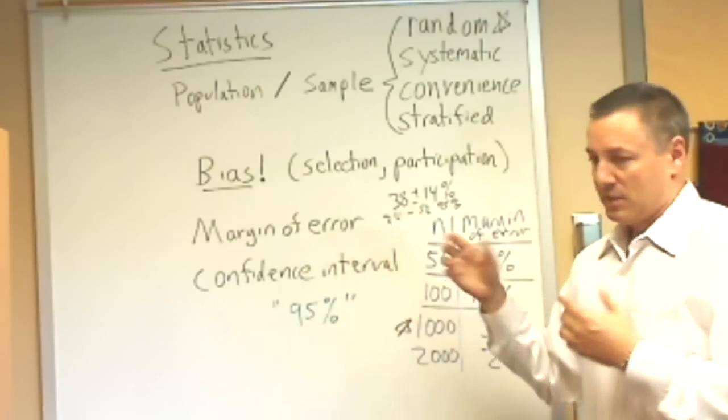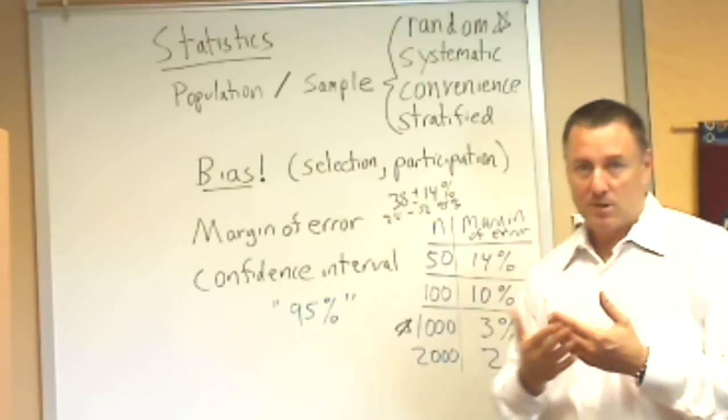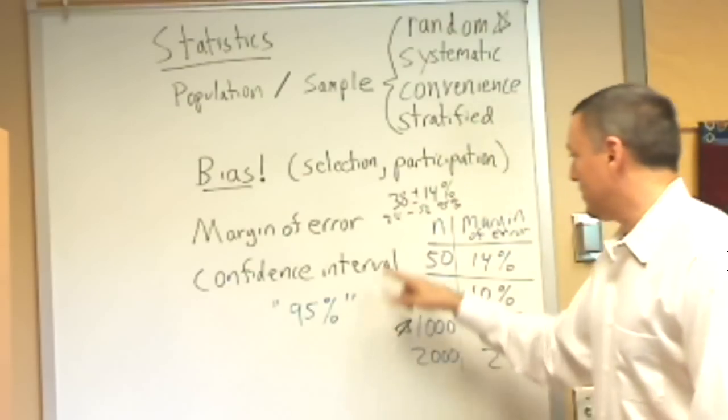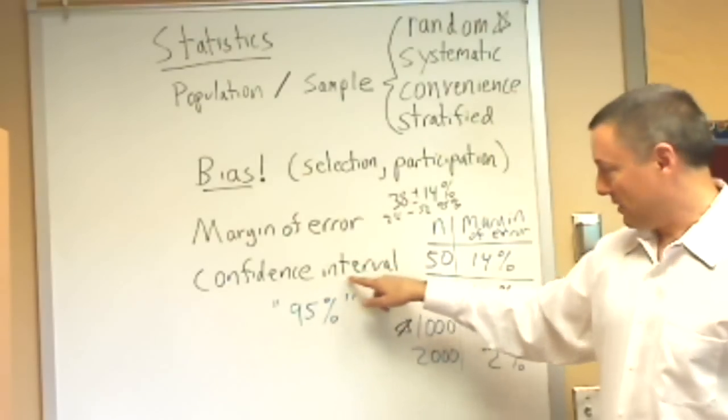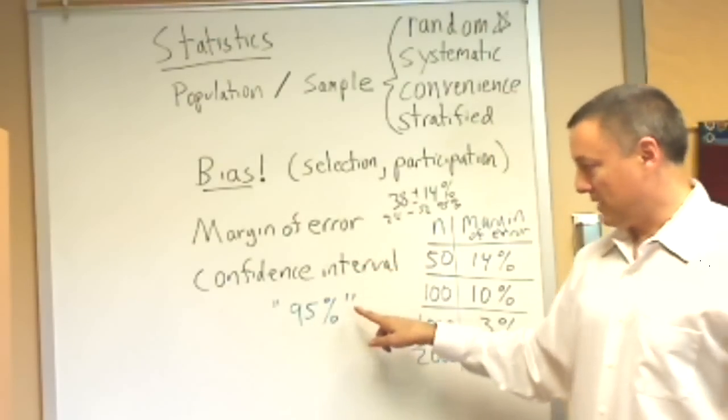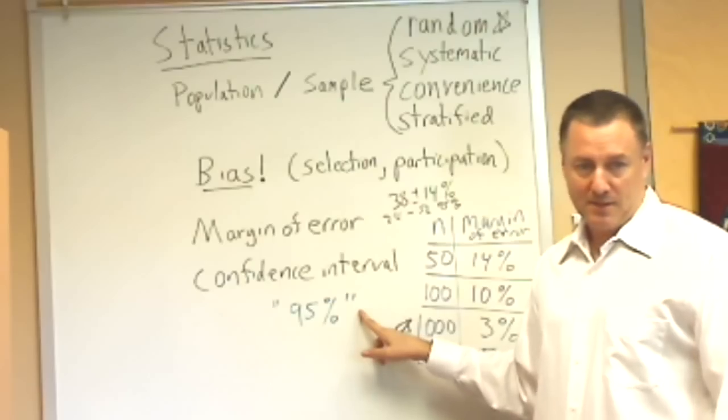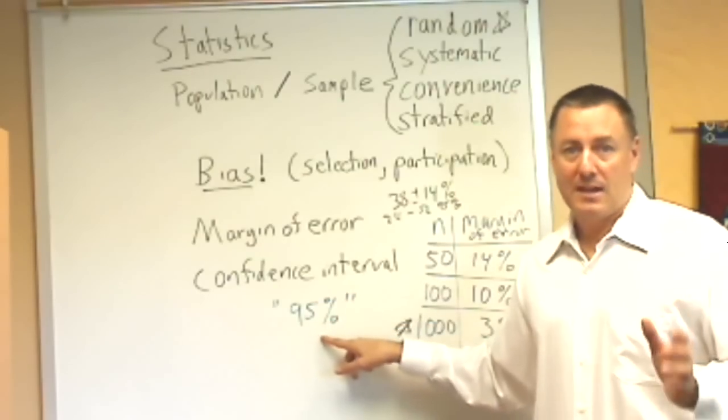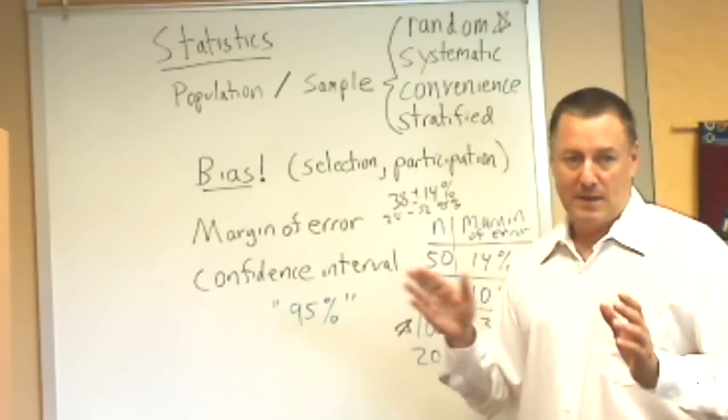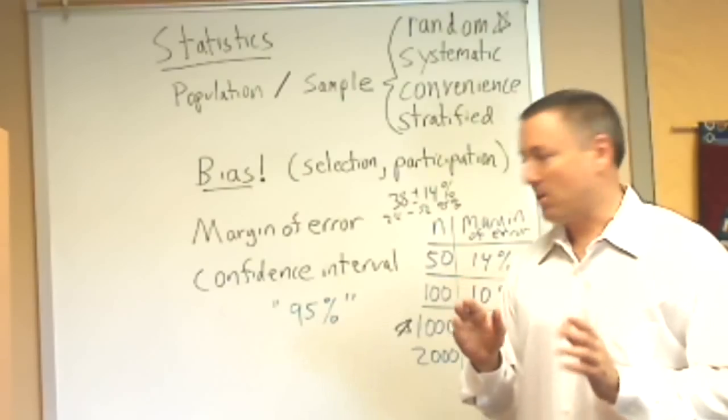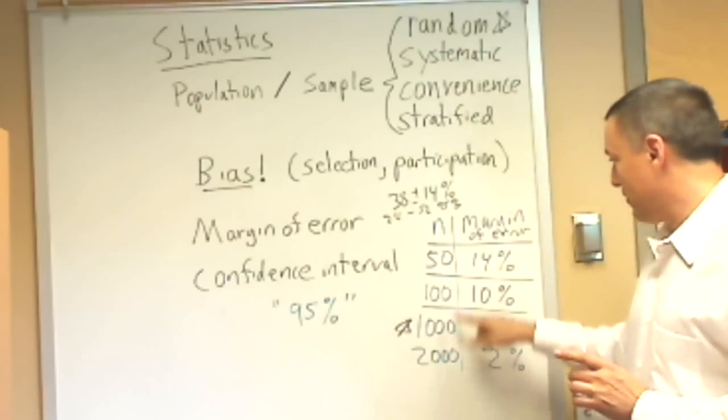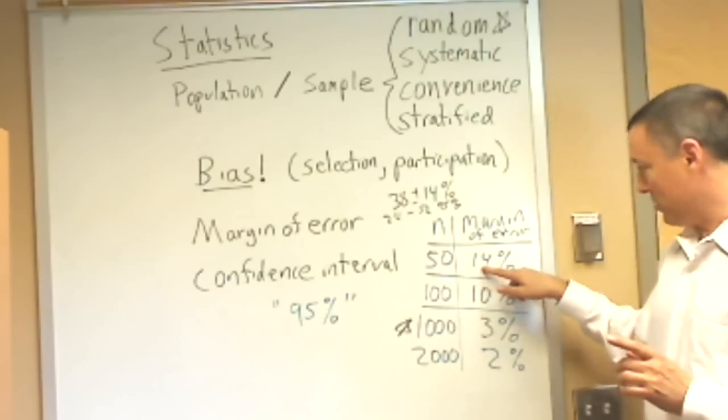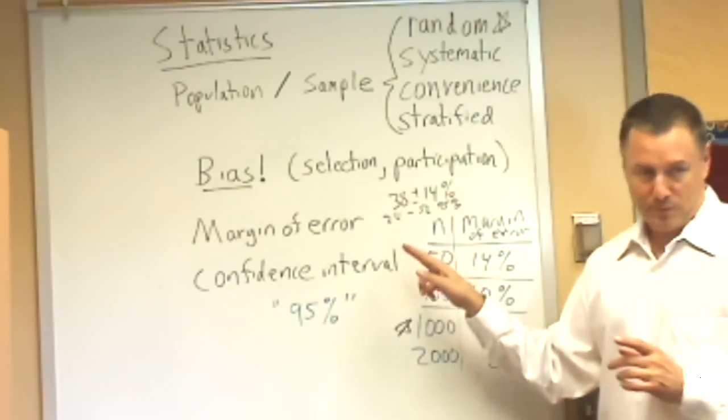Another important idea we have to face is margin of error. Despite trying to do everything the best we can, there are statistical errors that we're going to have to face. You'll see after surveys a lot of times the confidence interval. That generally means a 95 percent confidence interval. If you interview 50 people, the margin of error is 14 percent.